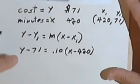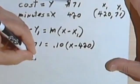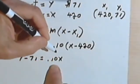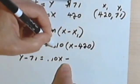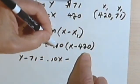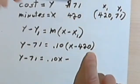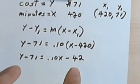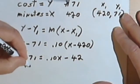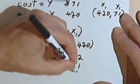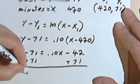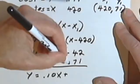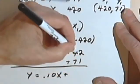And now I just have to do the math. So let's see. y minus 71 equals 0.10x, that's the 10 cents a minute, minus 0.10 times 420. Well that's just a matter of getting rid of this last zero. So that's 42. I could leave it like this, or if I wanted to I could add 71 to both sides. I'm going to get y equals 0.10x plus... this looks like 29.